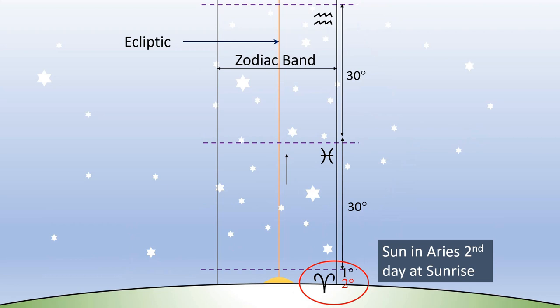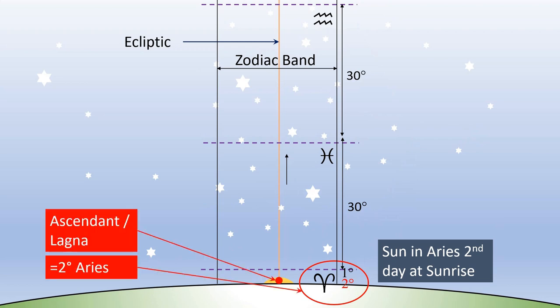So the person born at the next day's sunrise will have Aries ascendant, and the degree of the ascendant will be 2 degrees. Likewise, the last degree of the zodiac — in other words, 30 degrees of Pisces — will be on the eastern horizon at sunrise on the 30th day of Pisces, or the last solar month. In other words, on the last day of the solar year, the person born at the sunrise of this last day of the solar year will have Pisces ascendant, and the degree of the ascendant will be 30 degrees.